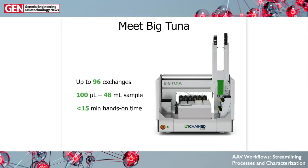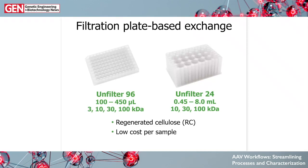That brings us to BigTuna, which is able to do up to 96 different buffer exchanges using sample volumes as low as 100 microliters and as high as 48 milliliters per sample, with only 15 minutes of hands-on time. This allows you to work with a high number of samples and a low volume of samples, which is appropriate for buffer exchange screening for AAV formulation development. The consumable that BigTuna works on is called an unfilter, available in an unfilter 96 and an unfilter 24, with regenerated cellulose membranes at the bottom.